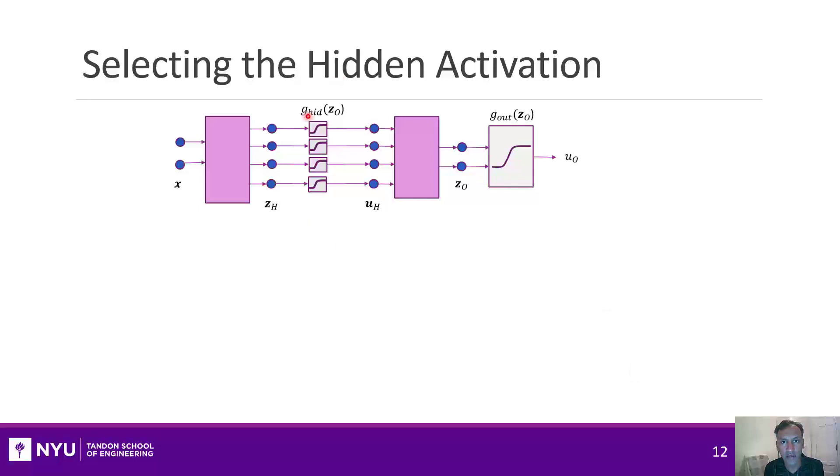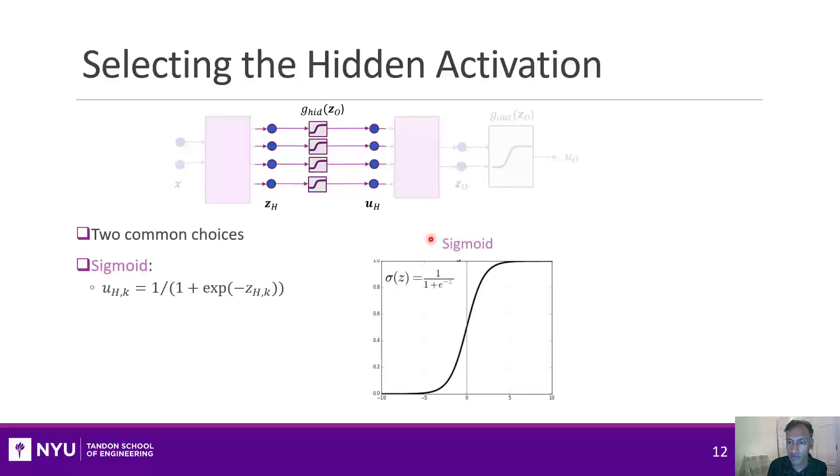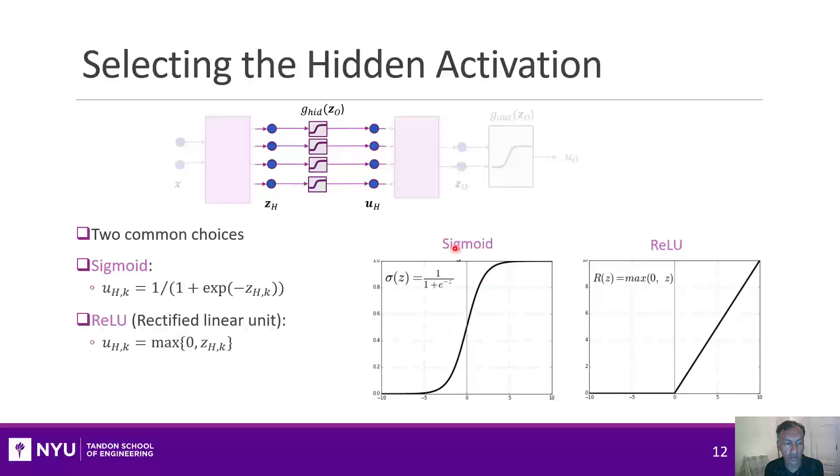Let's take a look at how you select the hidden activation in the middle. The hidden activation is the non-linear mapping of the output of the first linear layer to the input of the second linear layer. There are two common choices that we'll use in this class. The first is the sigmoid—that's what we just used here in our synthetic example—it makes a distinction between zero and one. The other is what's called the rectified linear unit, or ReLU, and that is basically zero up until zero and then it just goes up like a line. If you know electrical engineering, this is sometimes called a rectifier in that circuit terminology.